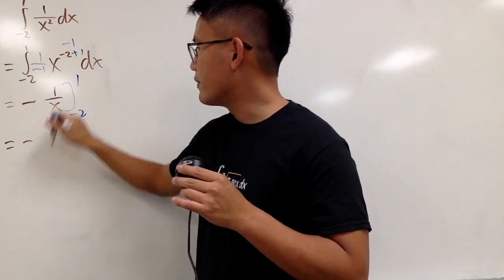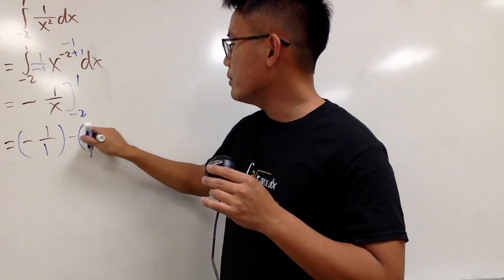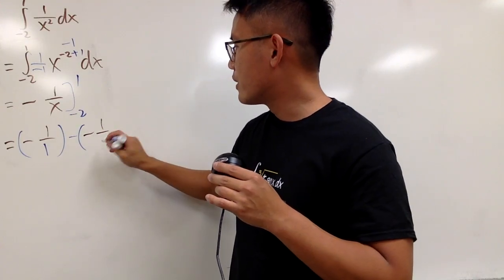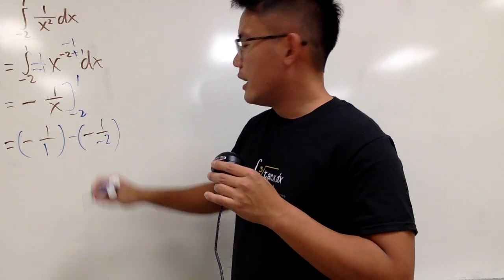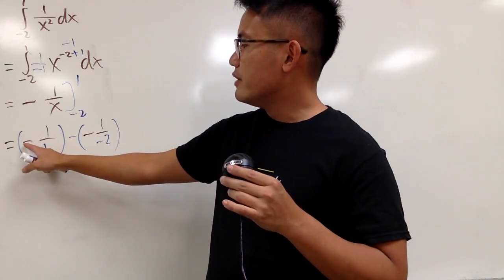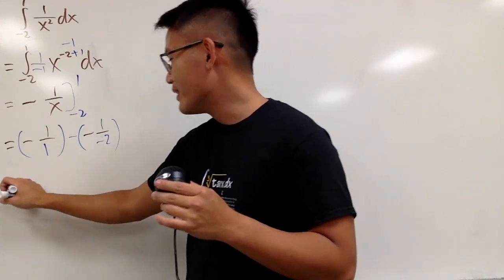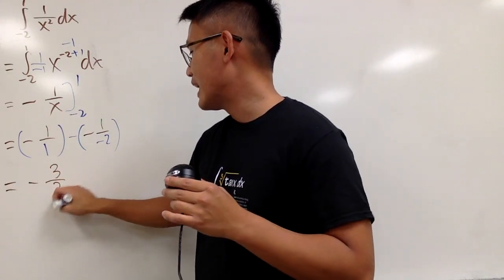And then we can plug in numbers now, 1 in first, so you have negative 1 over 1. And then minus, plug in negative 2, so you have negative 1 over negative 2 like this. And now you see this is pretty much positive 1 half, and you are saying negative 1 minus 1 half. So, just worked out your fraction, you end up with negative 3 half.